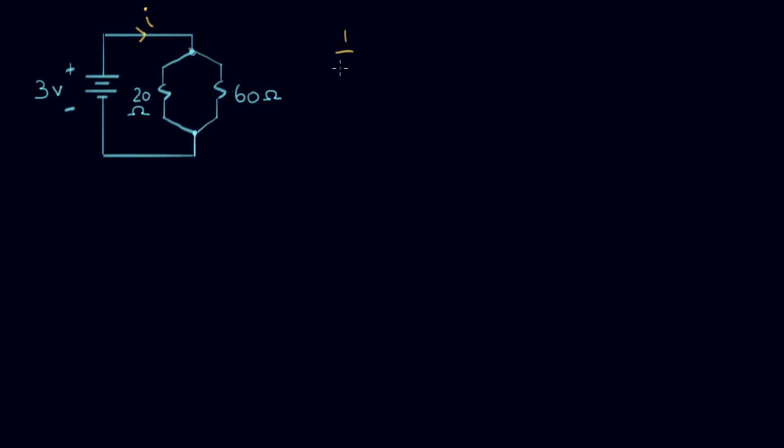So let's use our equation. We said that one over RP equals one over R1 plus one over R2. Let's just fill in the numbers. One over RP equals one over 20 plus one over 60. That equals, let's just make 60 the common denominator. So I have to multiply this one by three. Three over 60 plus one over 60, and that equals four over 60.